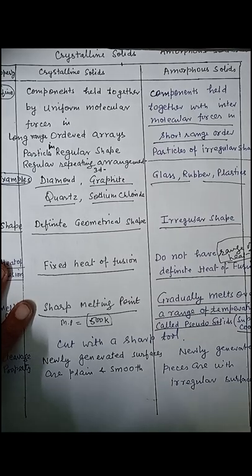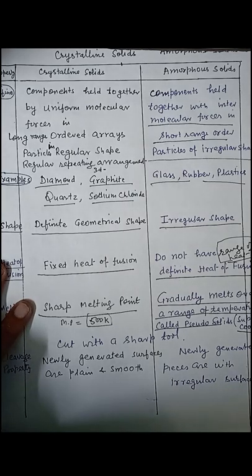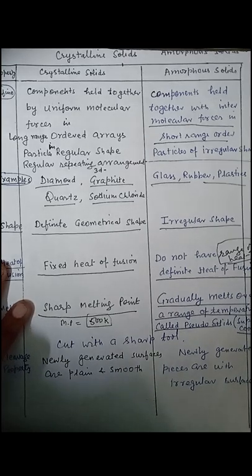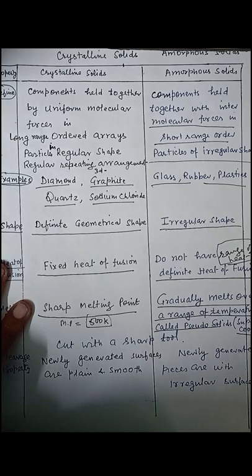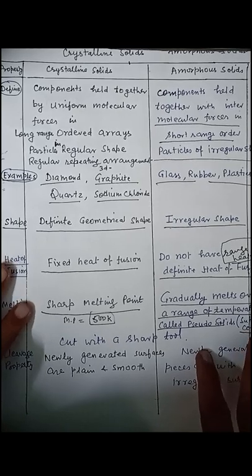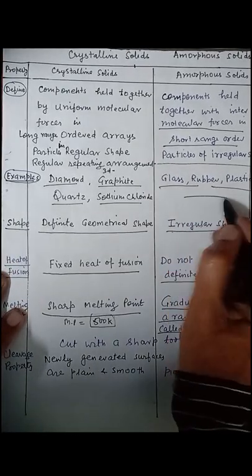Looking at examples, crystalline solids include diamond, graphite, quartz, sodium chloride, and potassium chloride. Examples of amorphous solids are glass, rubber, plastics, etc.